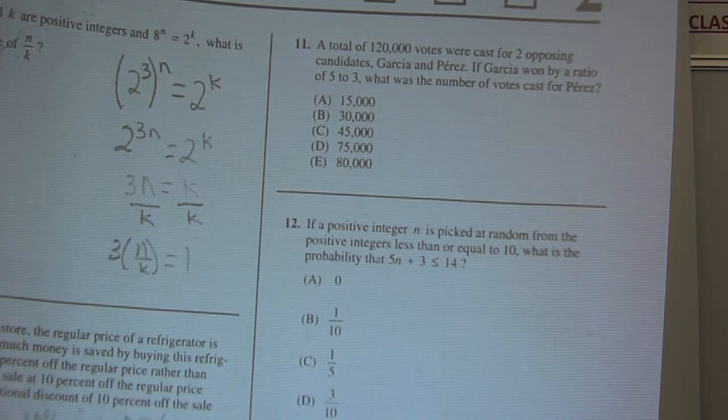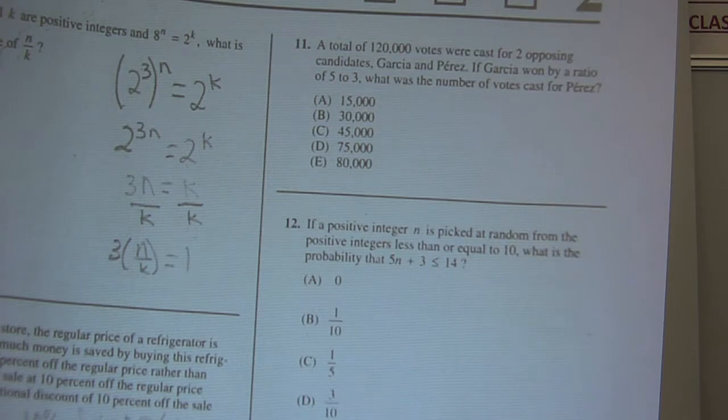Okay, here we go. A total of 120,000 votes were cast for two opposing candidates, Garcia and Perez. If Garcia won by a ratio of 5 to 3, what's the number of votes cast for Perez?